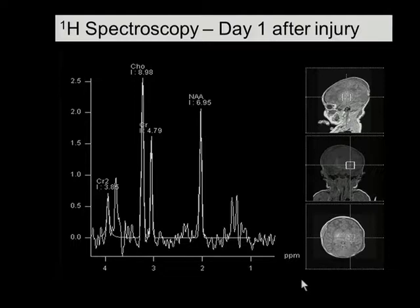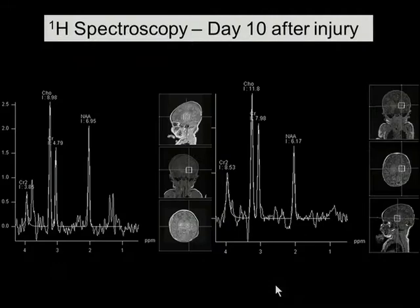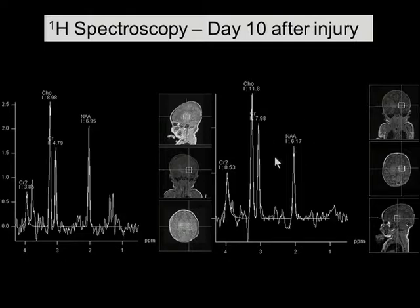Here is an infant in our own unit who underwent imaging on day one after an ischemic insult. You can see this doublet of lactate peak with a preserved N-acetyl aspartate. When we imaged this infant 10 days later, the lactate is no longer visible but the NAA peak has fallen, consistent with neuronal loss.